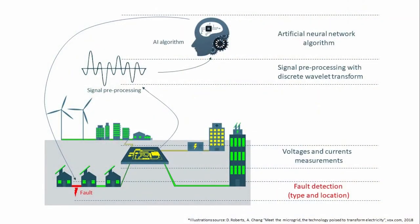However, during the islanded mode of operation, there are still unsolved technical challenges, or solutions that are just not feasible to implement on that small scale. One of the main challenges is the protection from faults, since they may cause both electrical shock to humans and the malfunction of the microgrid.